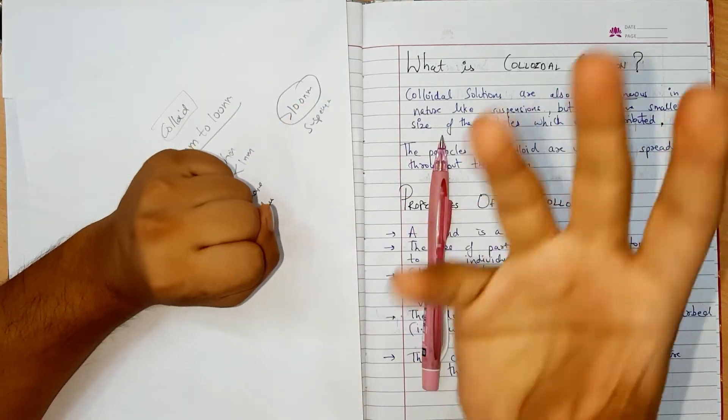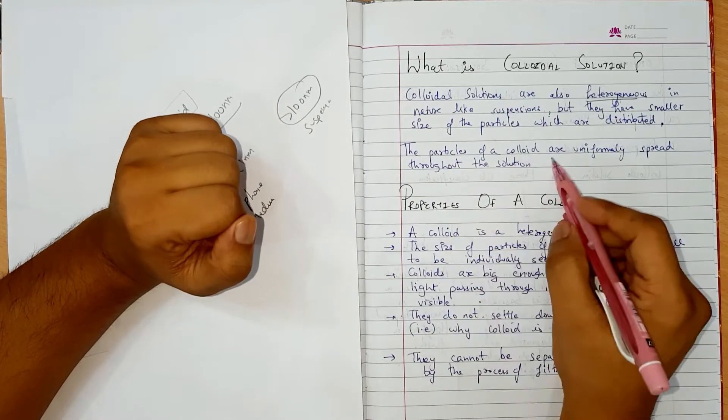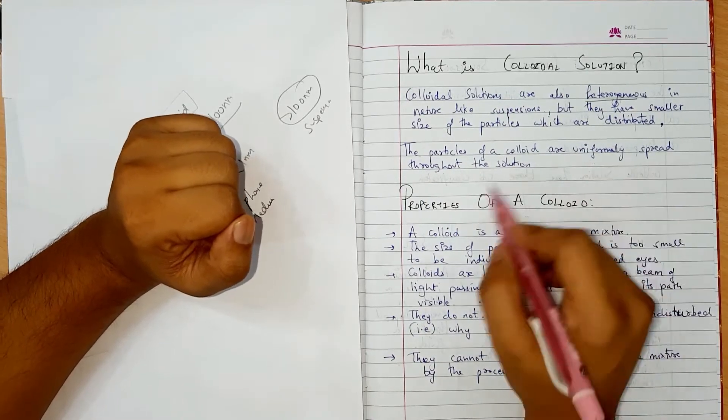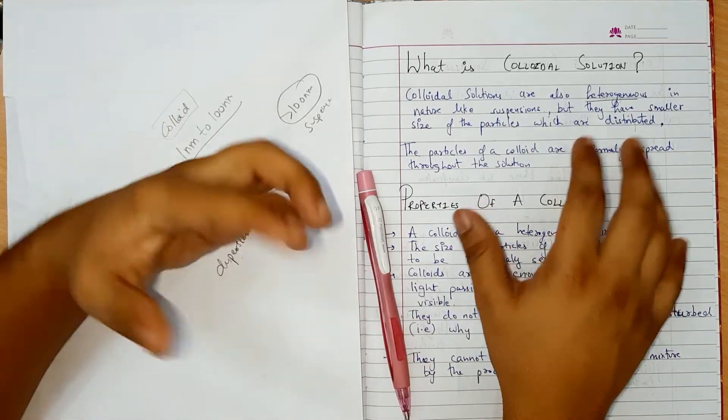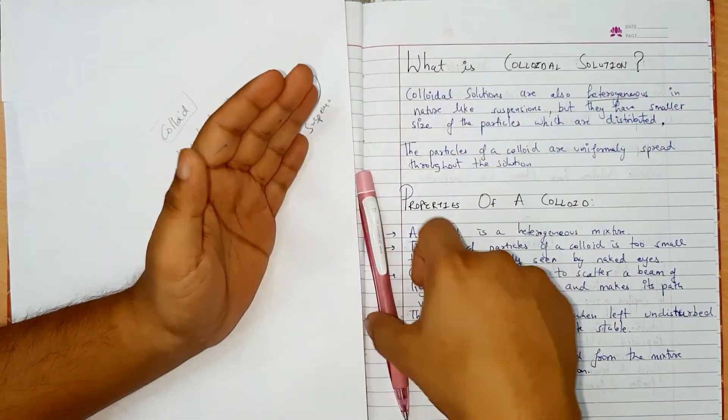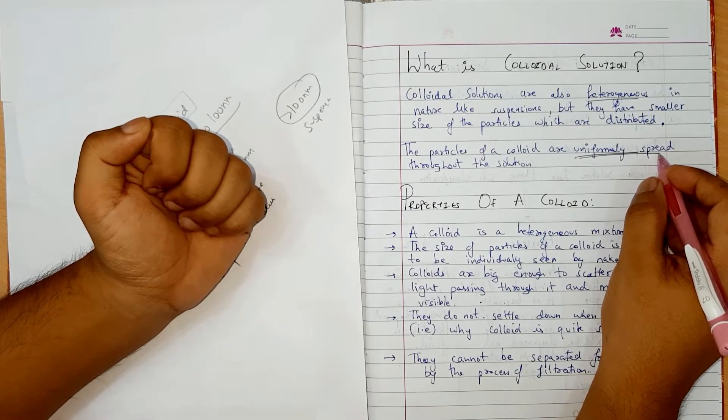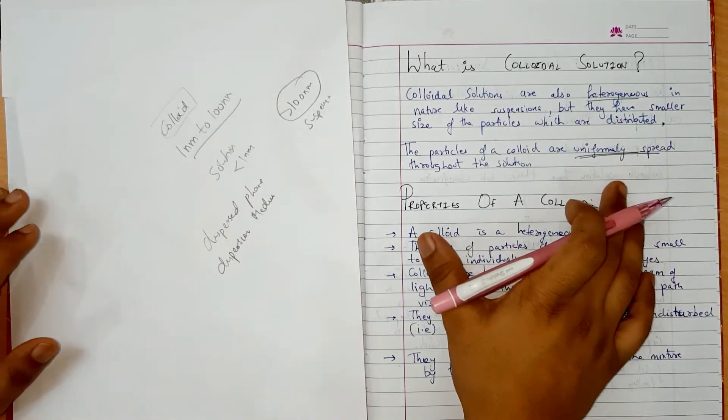This is called constituents of colloidal solutions or components of colloidal solutions, but they have smaller size of particles which are distributed. The particles of colloid are uniformly spread throughout the solution. The particles are properly mixed, we cannot differentiate the particles. That's why they are stable.